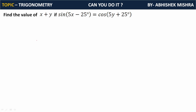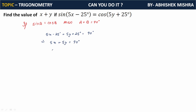The next question: find the value of x plus y if sin(5x - 25°) equals cos(5y + 25°). We use the theory that if sine A equals cos B, then A plus B equals 90 degrees. So (5x - 25°) plus (5y + 25°) equals 90 degrees. The minus 25 and plus 25 cancel, giving 5x plus 5y equals 90 degrees. Taking 5 common, x plus y equals 90 divided by 5, which equals 18 degrees.